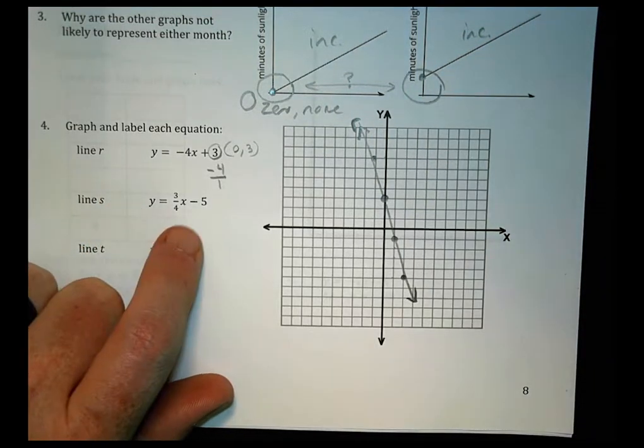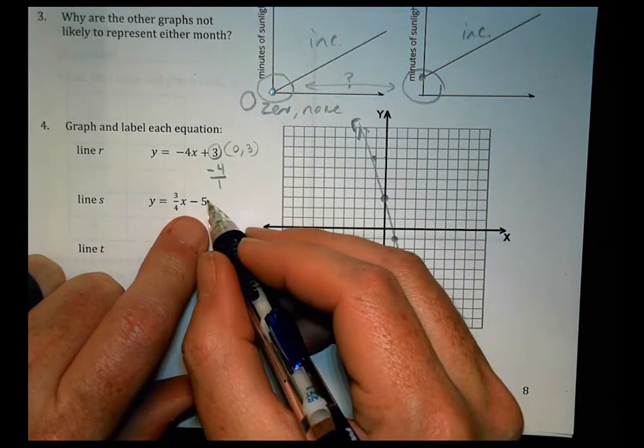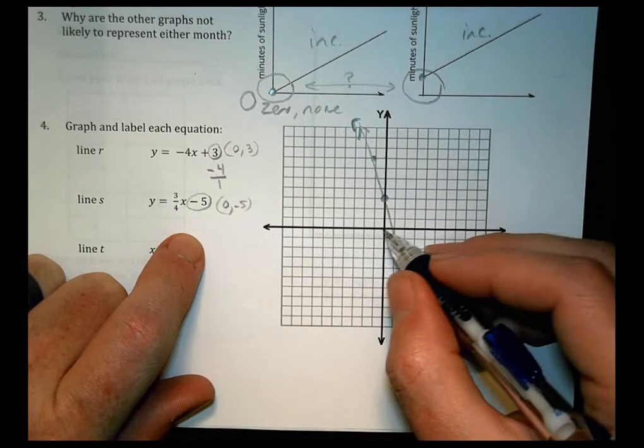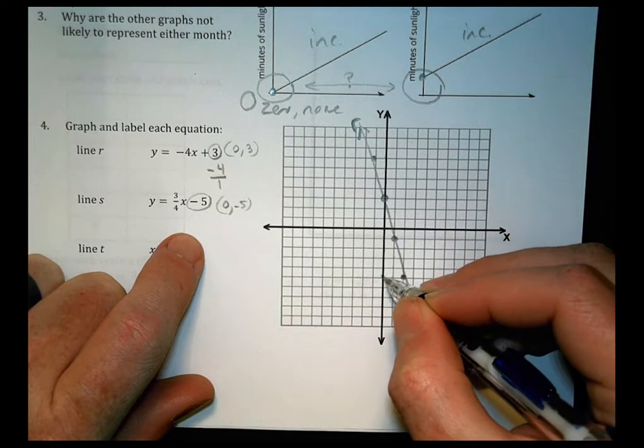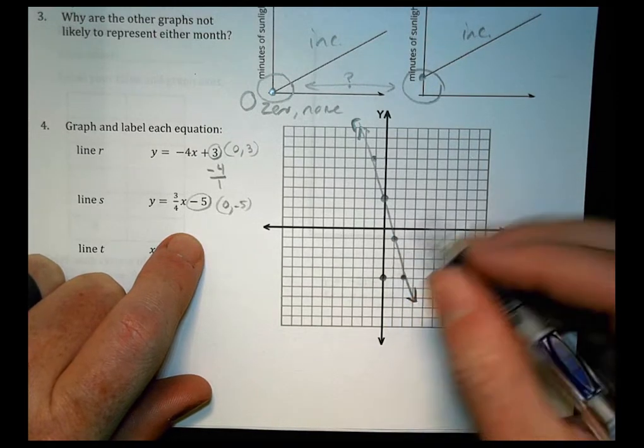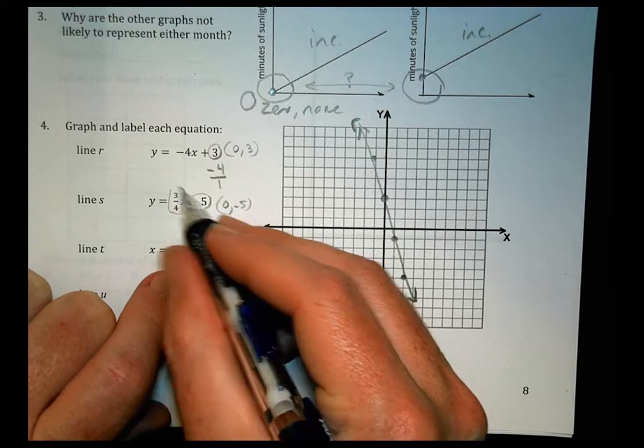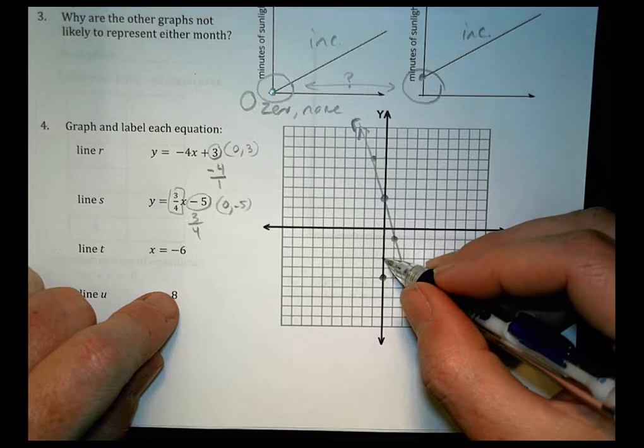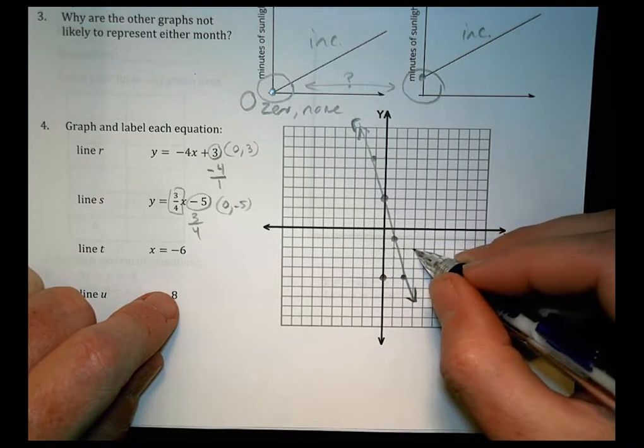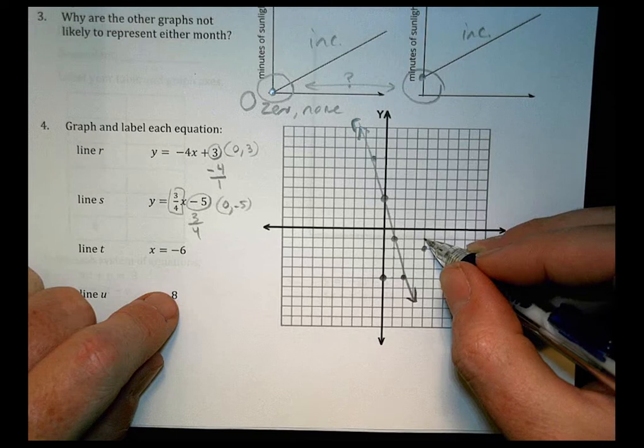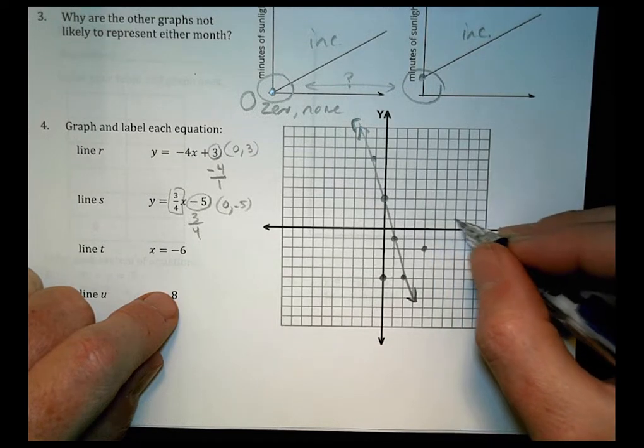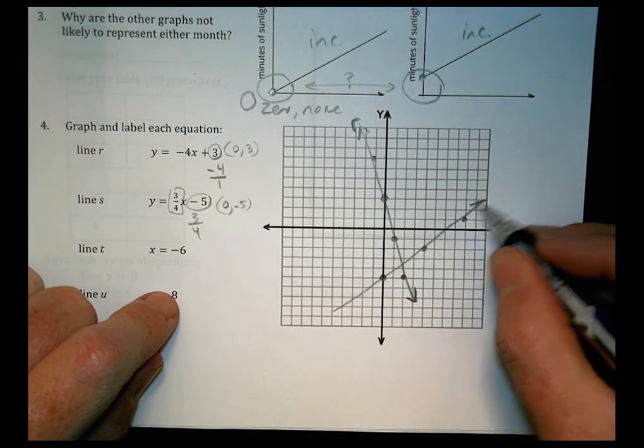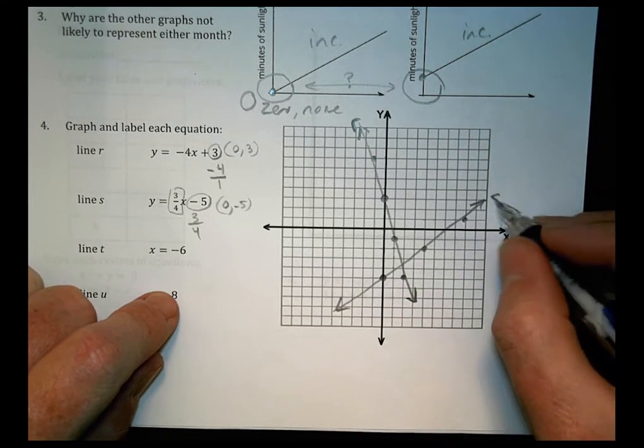Our next one, the y-intercept is happening at zero comma negative five. So here's zero comma one, two, three, four, five right there. Our slope is up three over four. So we can go ahead and go one, two, three and over one, two, three, four. And up one, two, three and over one, two, three, four. So we have three points, that's enough for us. We can get our straight edge and draw our line, and that becomes line s.